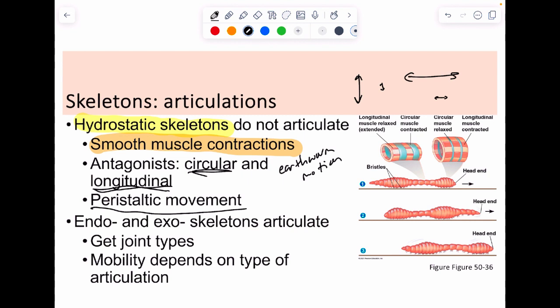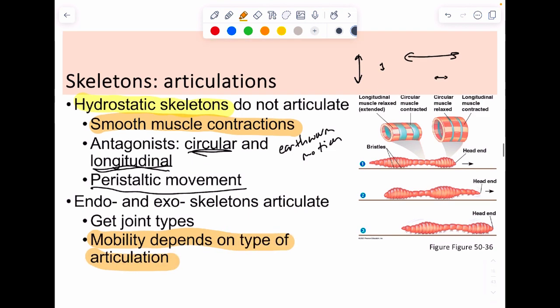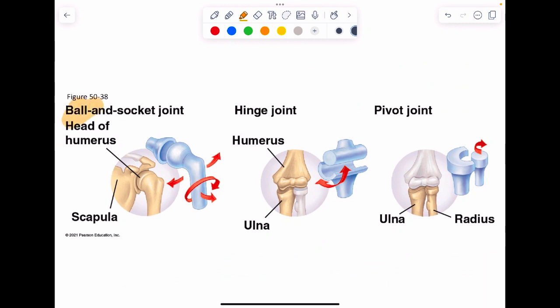Hydrostatic skeletons don't make articulations, but the other skeletons—endoskeletons and exoskeletons—do articulate. We give joints different names, and they vary in flexibility. We could have a ball-and-socket joint like your shoulder or hip, a hinge joint like your elbow or knee, or pivots like your neck and forearm where you can make twisting motions. Each has its advantages and limitations.